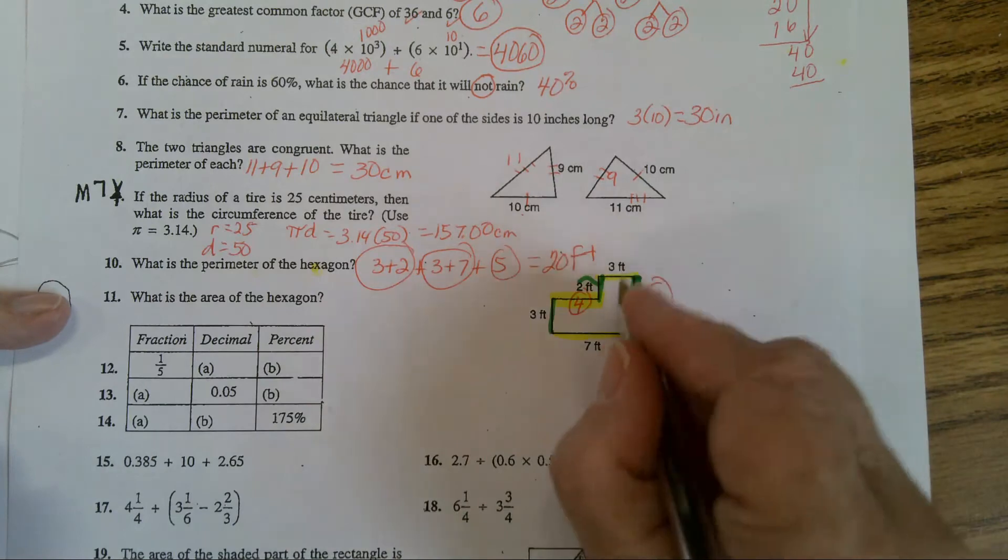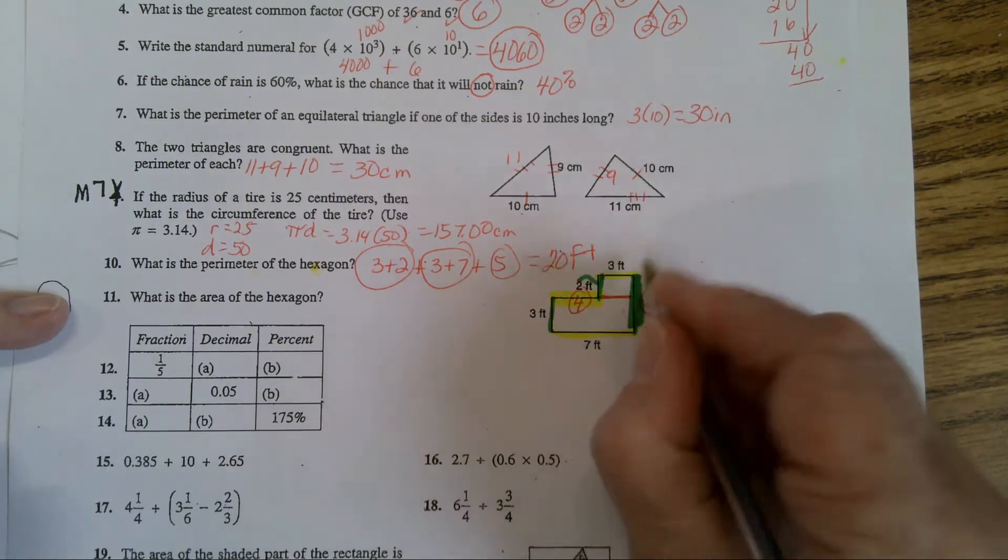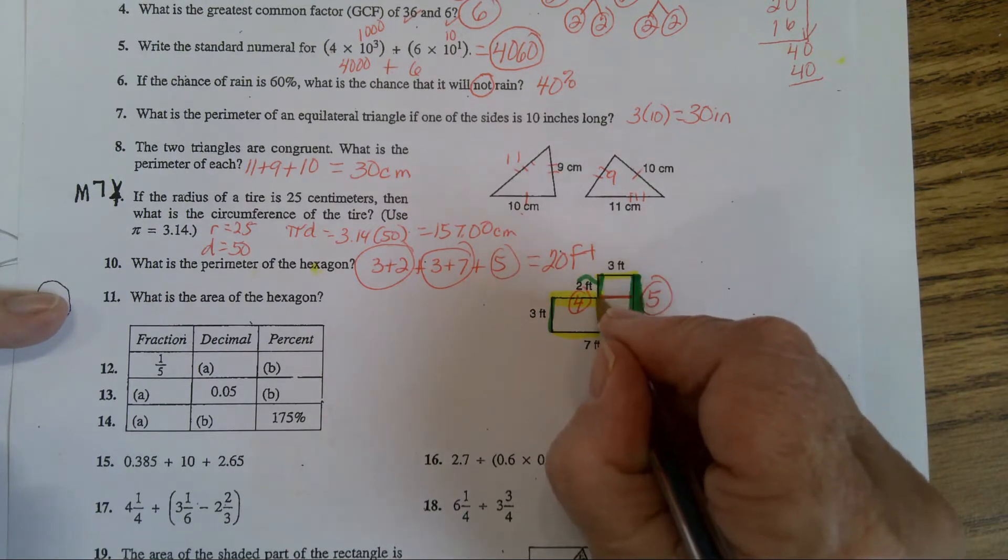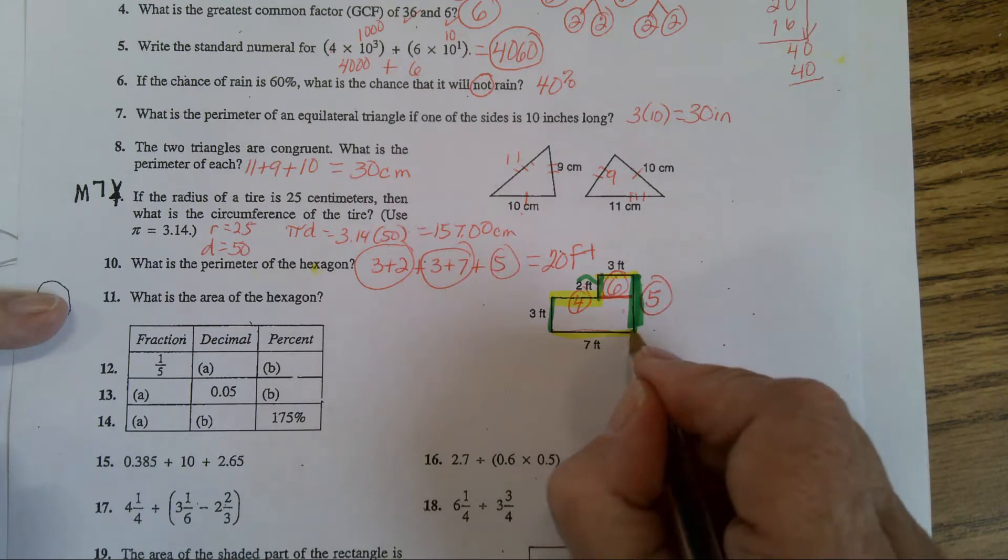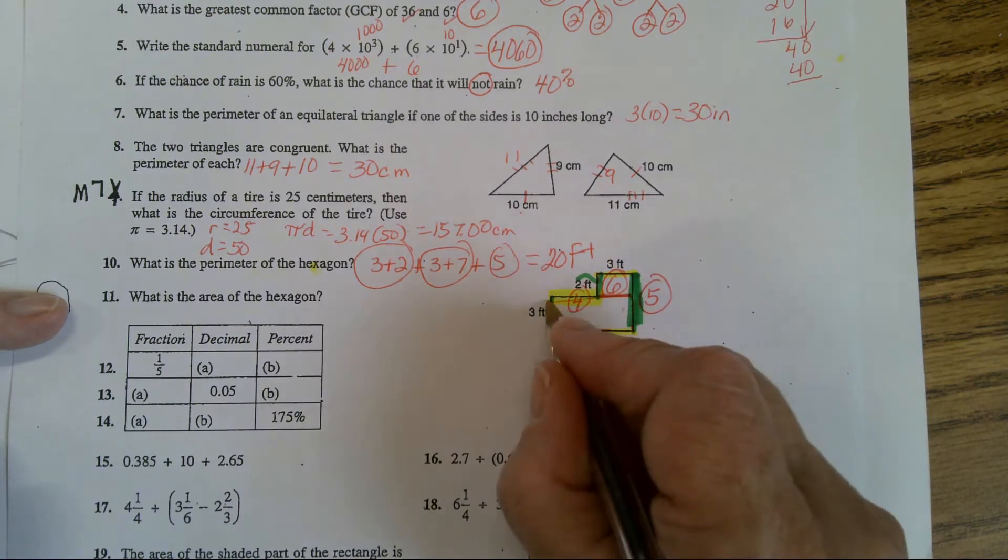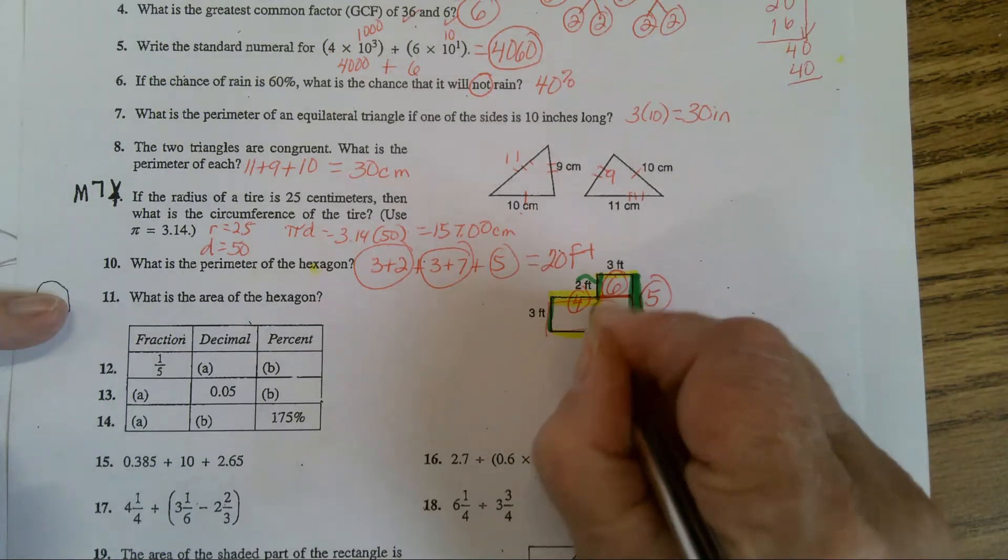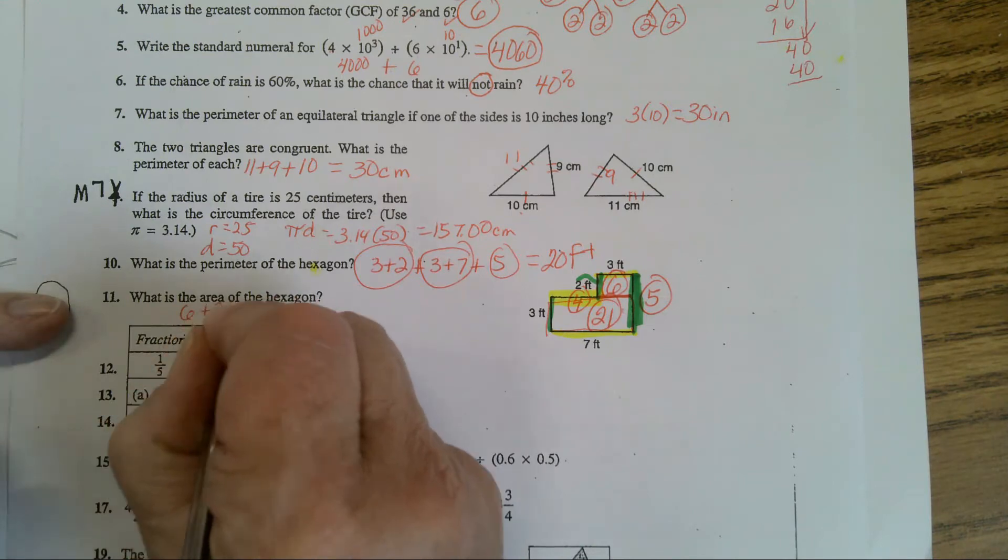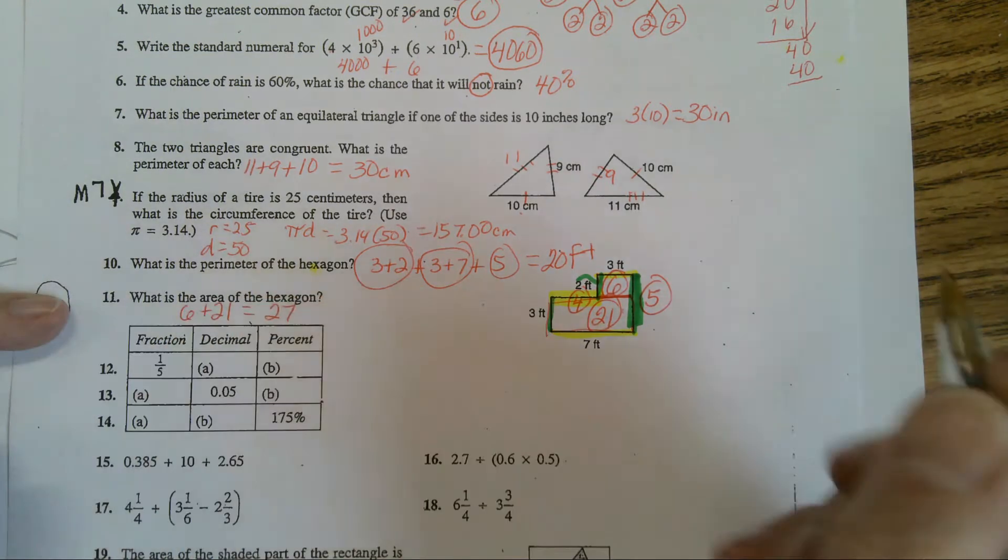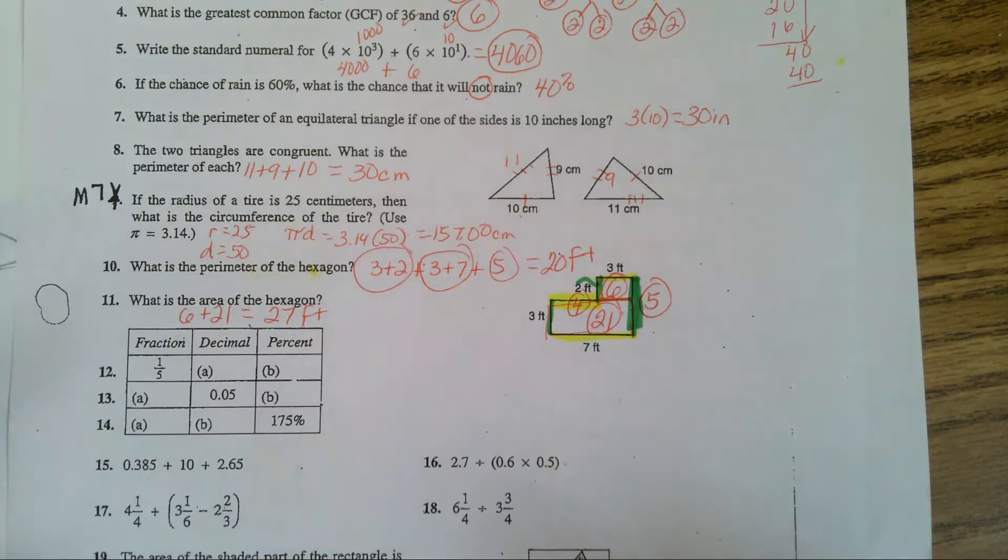Now for the area, I would cut it up into two pieces. This piece is 3 by 2. That's 6. This piece is 7 by 3. So that's 21. 6 plus 21 equals 27 feet. Are there any questions?